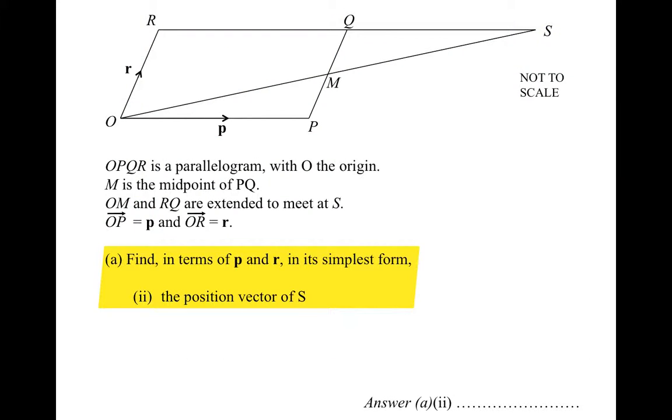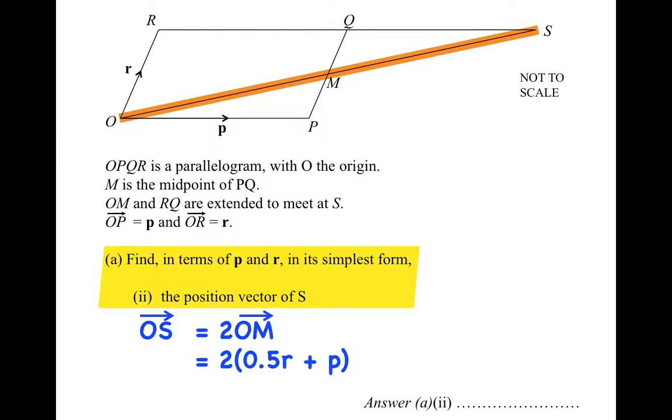Back to the question, we need to find the position vector of S, in other words the vector OS. How do we get from the origin O to the point S? One way of getting there is to do from O to M but twice. We saw already that vector OM was 0.5R plus P, so we have to do 2 of 0.5R plus P. We can multiply those brackets out to get a whole R plus 2P. The final answer is R plus 2P. The vector that will get us from O to S is R plus 2P.